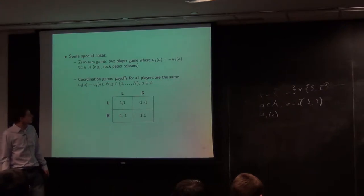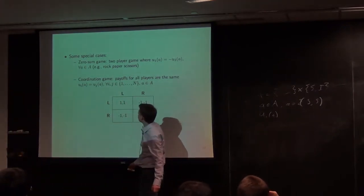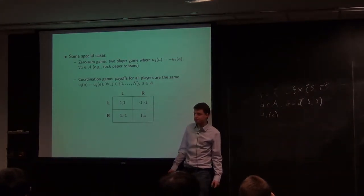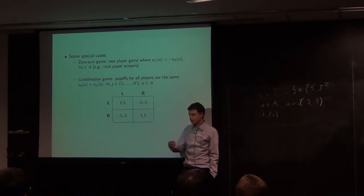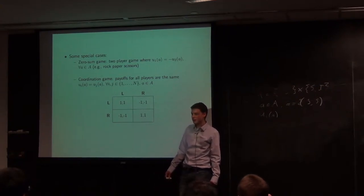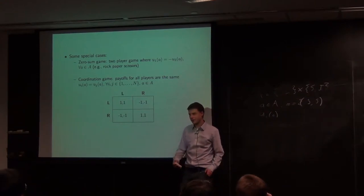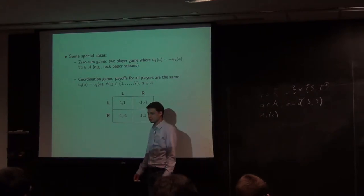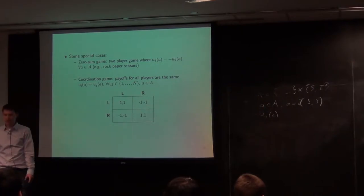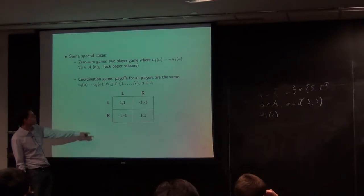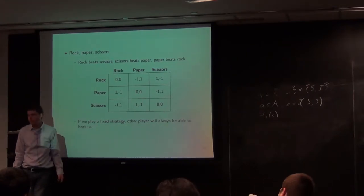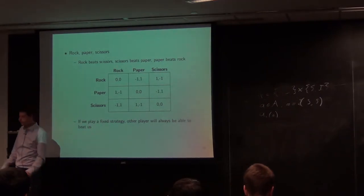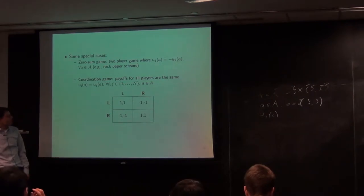This drives home an important point: unlike the other games, you cannot win Rock Paper Scissors by playing what's called a pure strategy. You have to randomize over your actions in order to win this game. There are also a few special cases. A zero-sum game is a game where the rewards of one agent are always the negative of the rewards of the other agent. Almost any game we think of as a competition — like a board game — is zero-sum, because if one person wins, the other loses. Rock Paper Scissors is a zero-sum game because the two rewards in each case sum to zero.